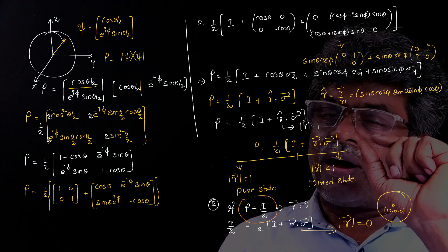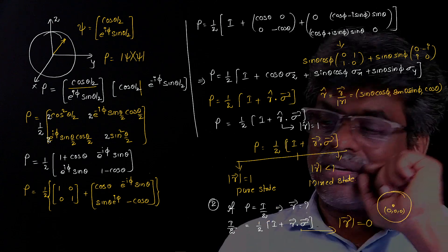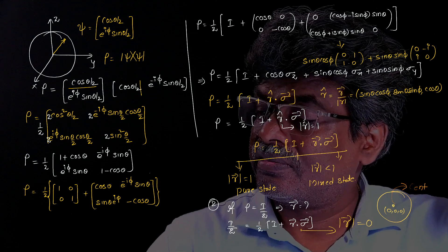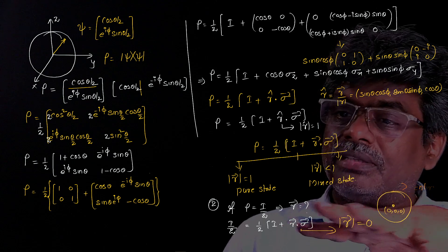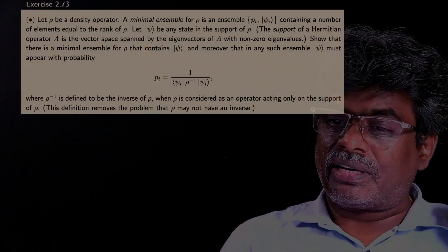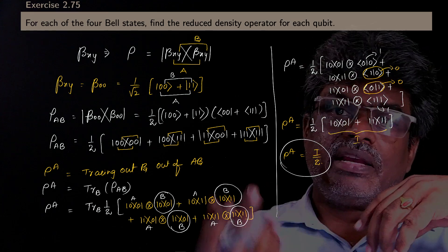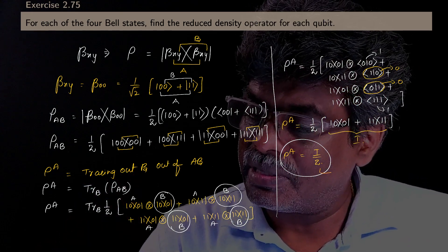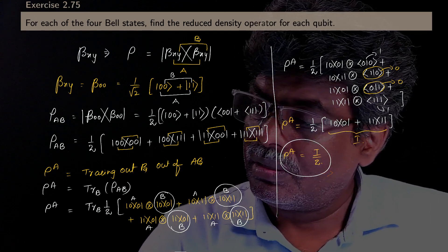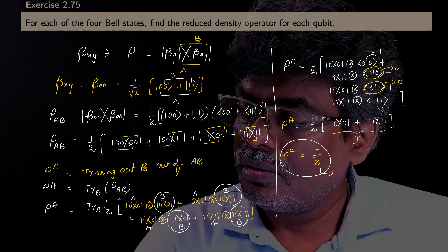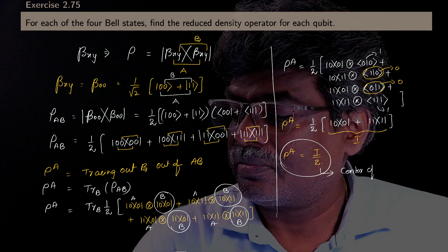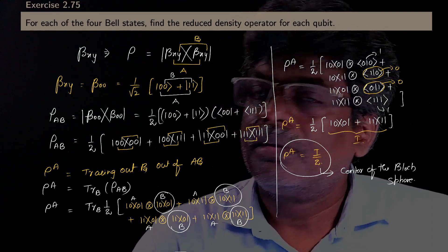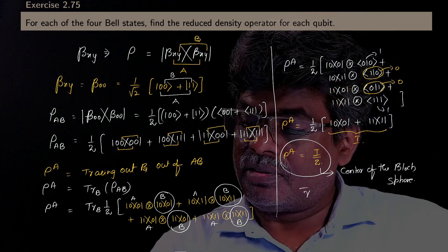The density operator ρ = I/2 corresponds to the Bloch vector r̄ = 0. That means it represents the center of the Bloch sphere. I think this problem and that earlier one are related.